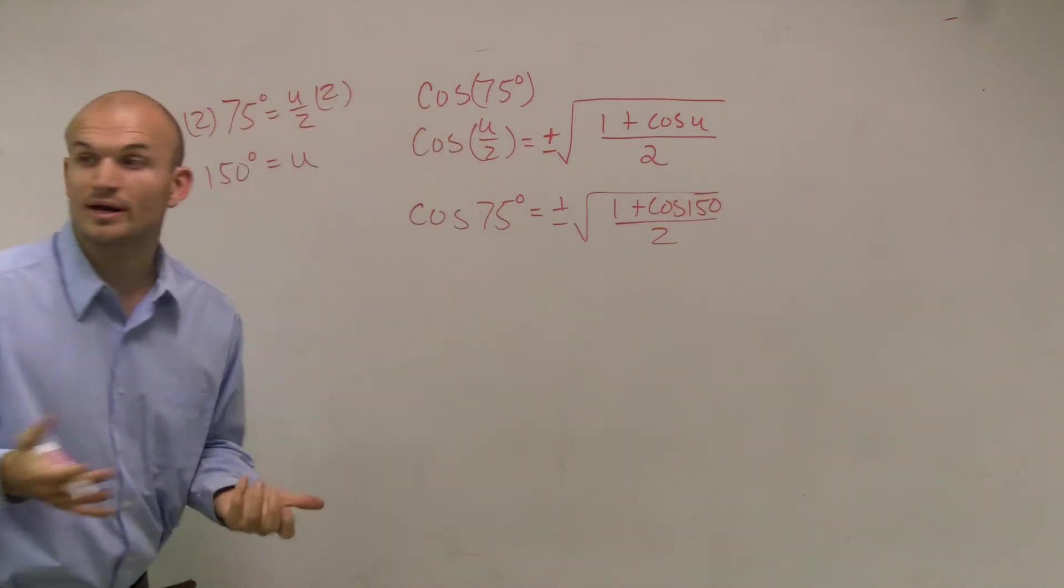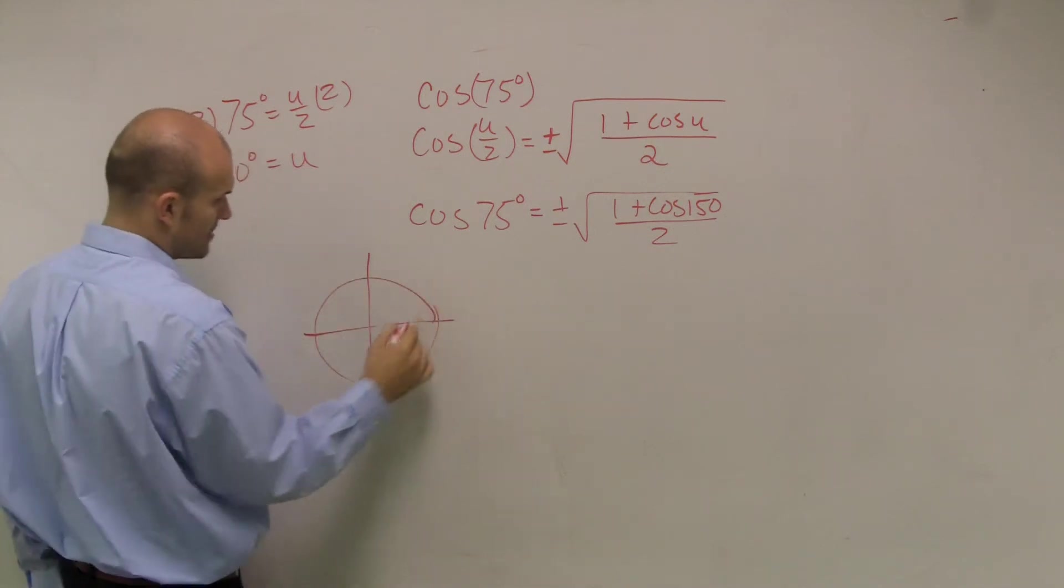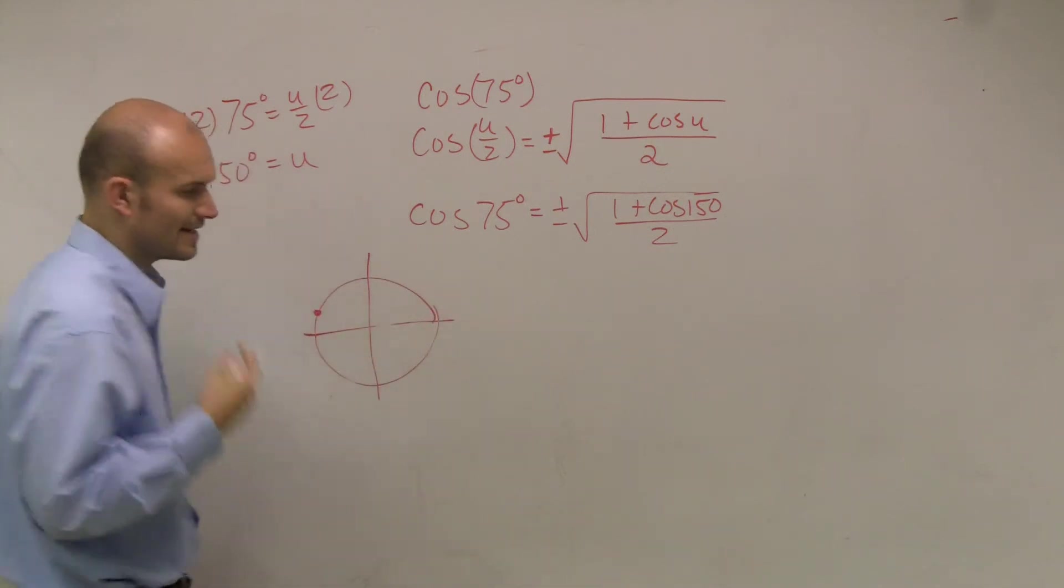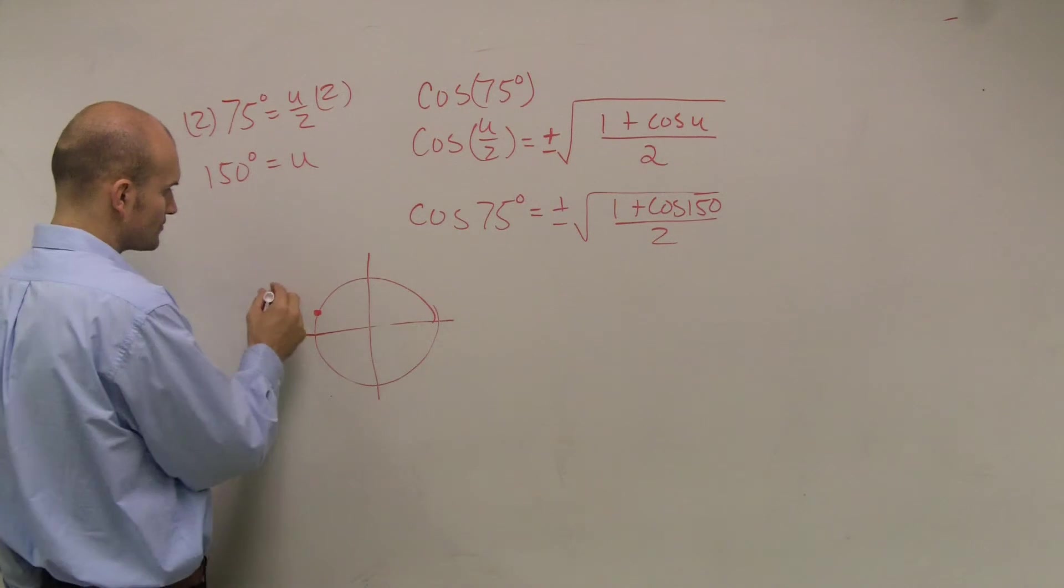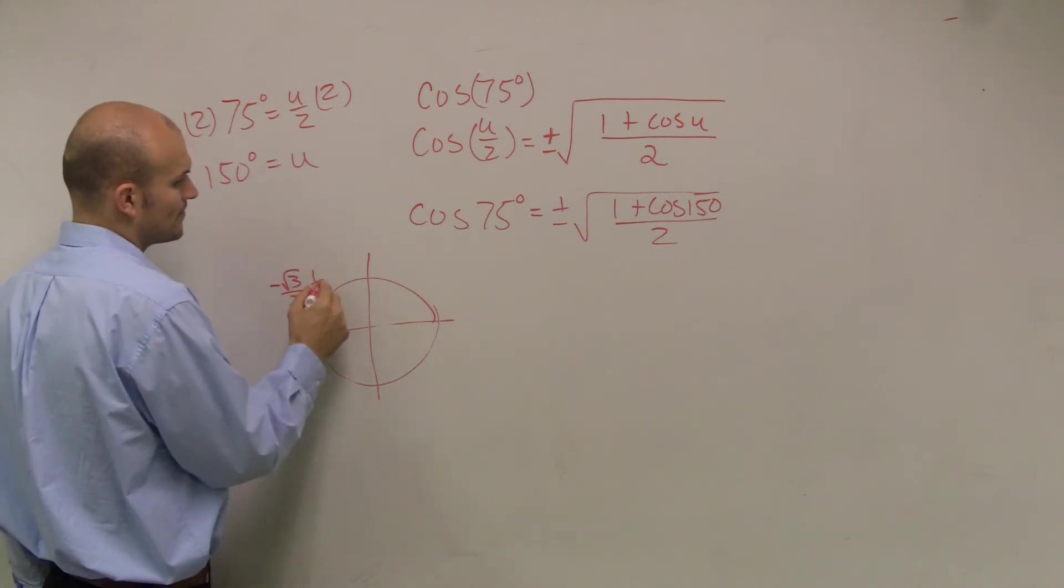Now I need to determine what is the cosine of 150 degrees. So I go ahead and take a look at my unit circle. I determine 150 degrees is going to be roughly here. And I think about my unit circle. That's going to be the point negative radical 3 over 2, comma, 1 half.